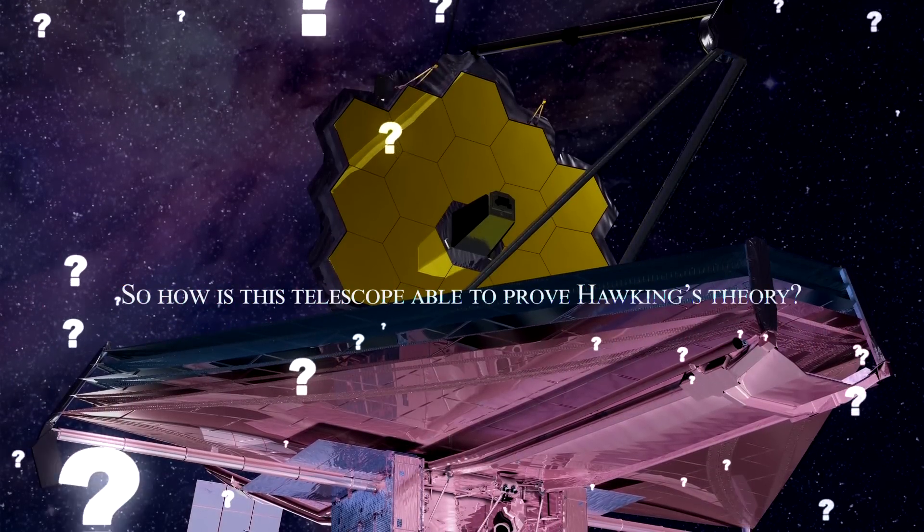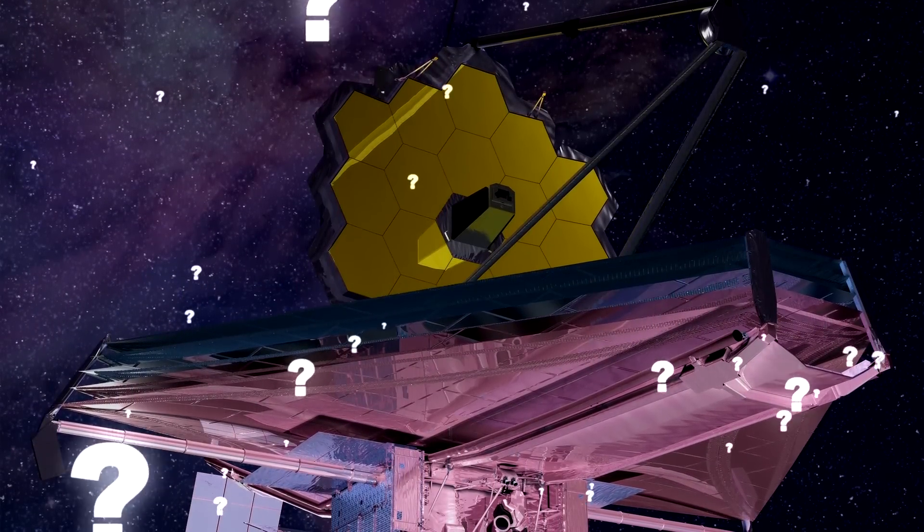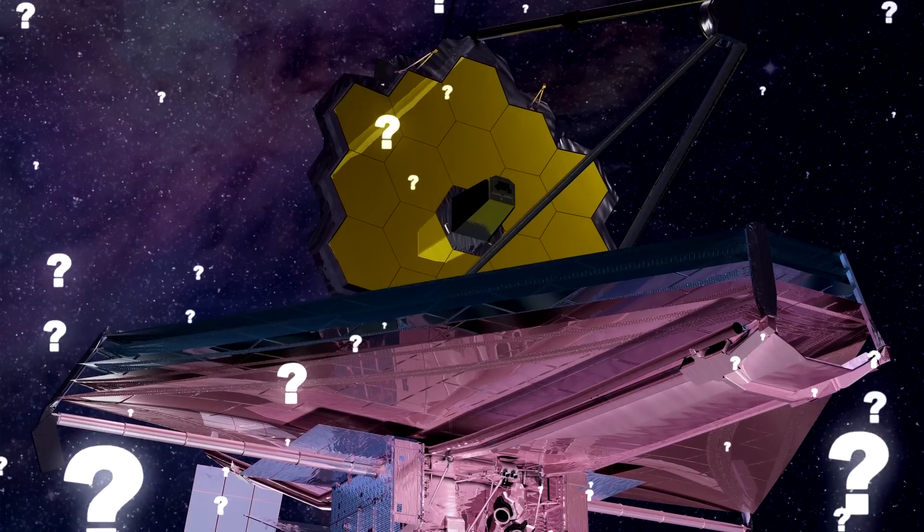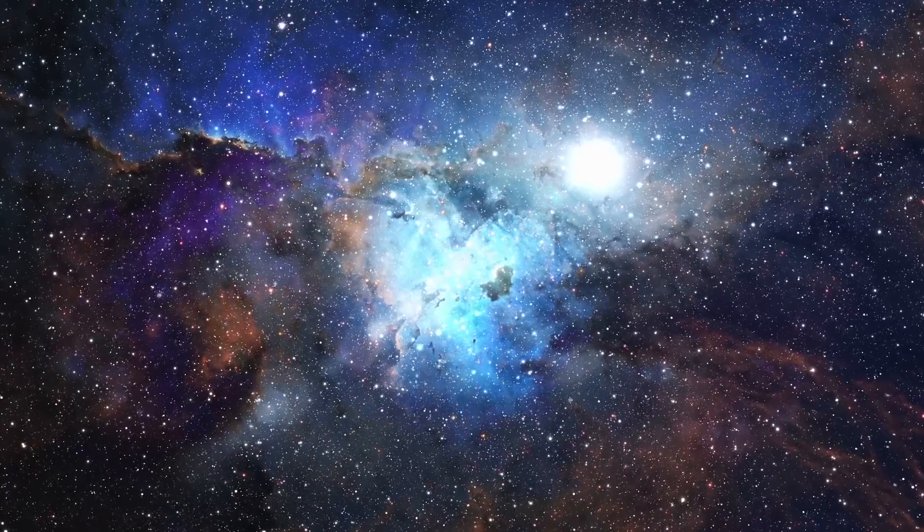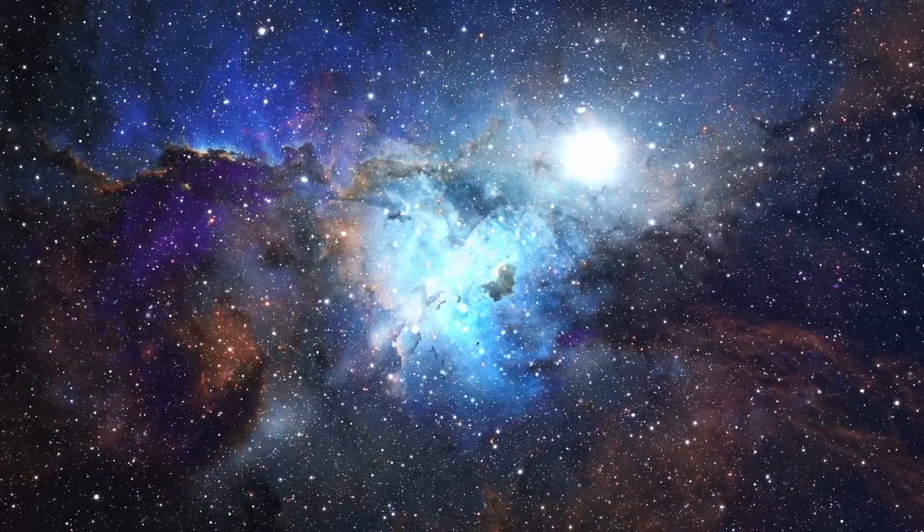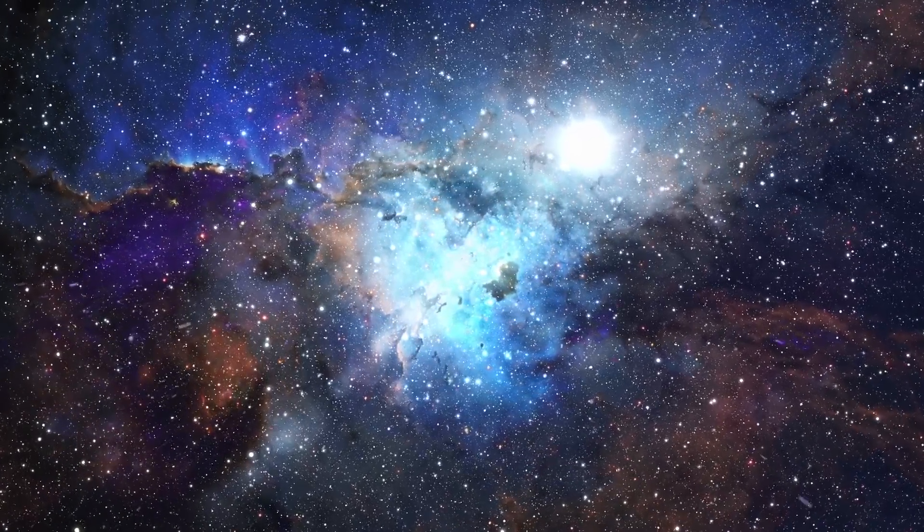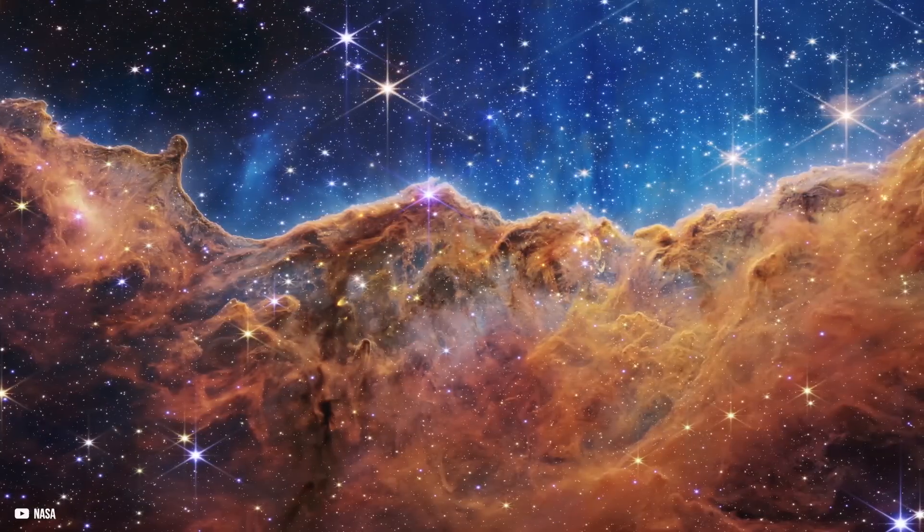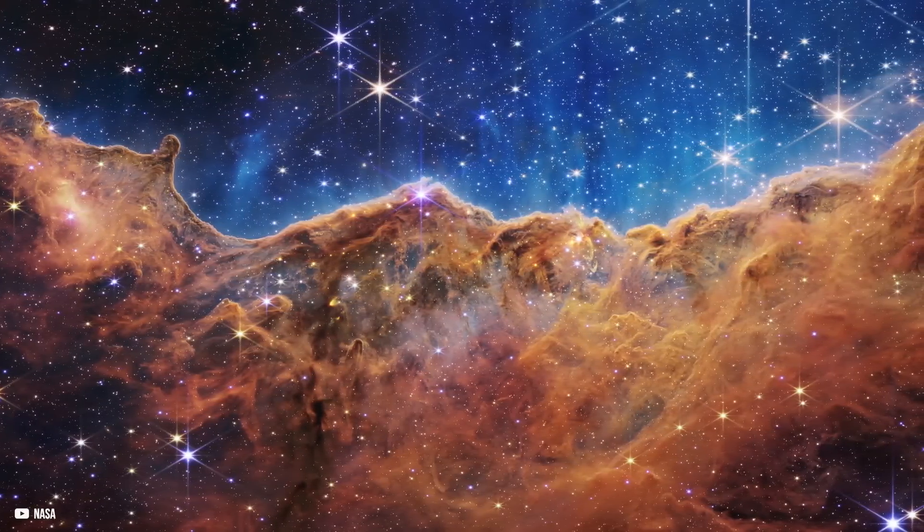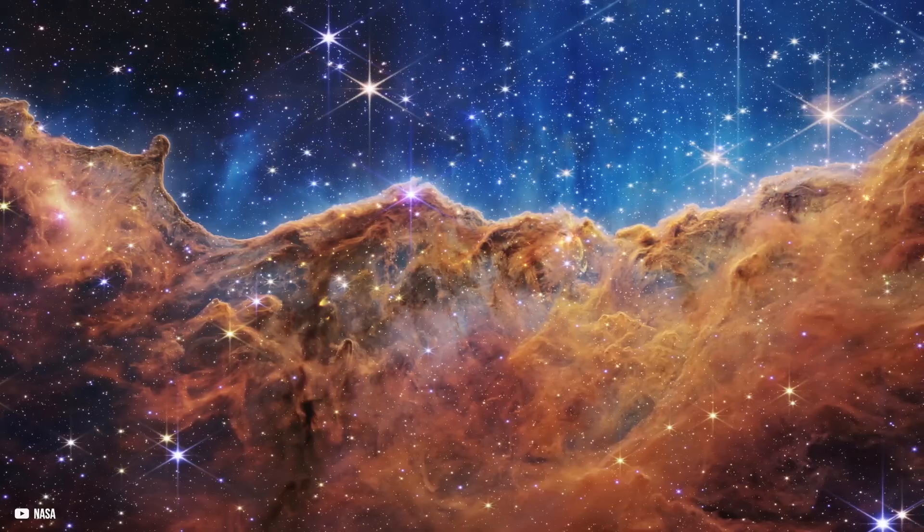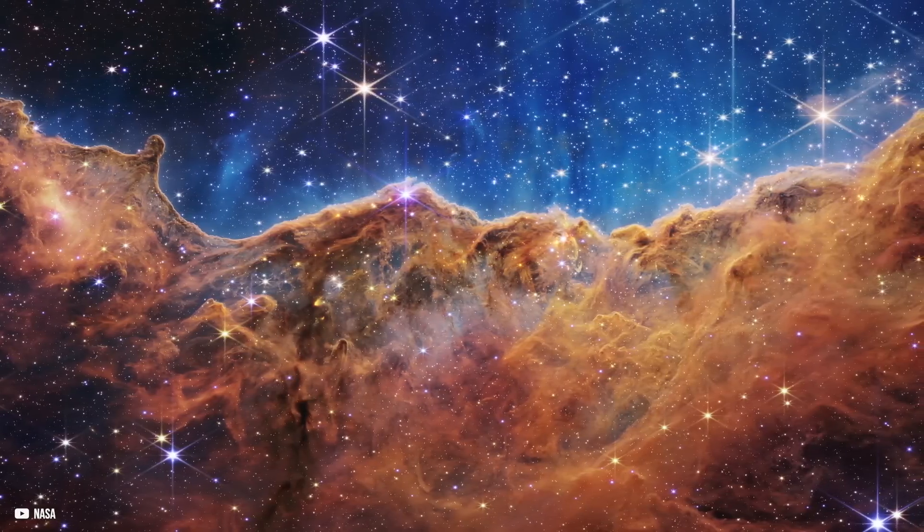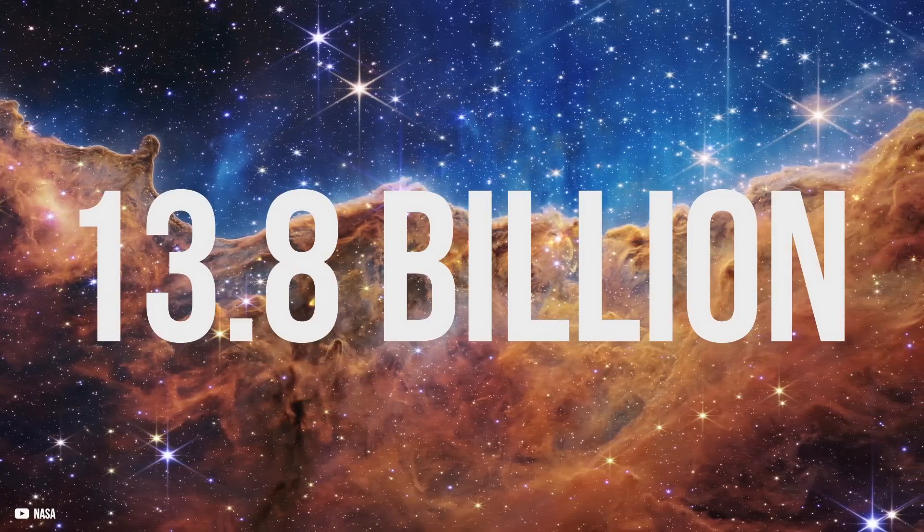So how is this telescope able to prove Hawking's theory? The telescope is able to look inside other planets' atmospheres that are outside of our solar system. It is possible to see through enormous dust clouds to observe the formations of new stars and planetary systems. JWST will be able to collect and reflect light from the early cosmos. It will be able to see from the first stars and galaxies that were close to the Big Bang, which is predicted to have occurred 13.8 billion years ago.